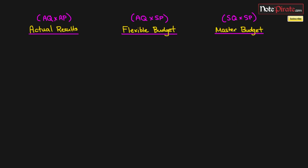The master or static budget uses standard quantities and standard prices — also known as budgeted quantities and budgeted prices. This is your most forecasted budget; it contains only estimates. The only difference between the master budget and the flexible budget is an adjustment to quantities: the flexible budget adjusts for actual quantities, while the master budget retains standard or budgeted quantities.